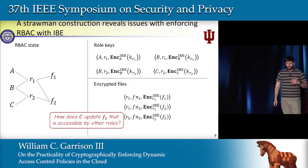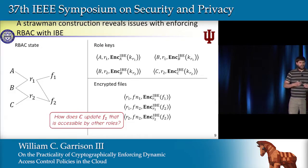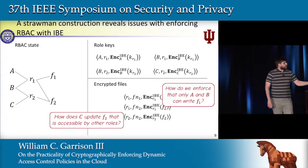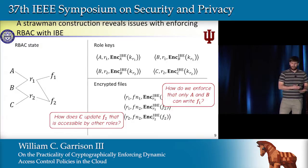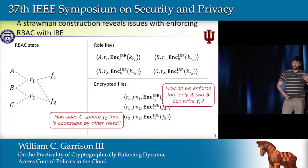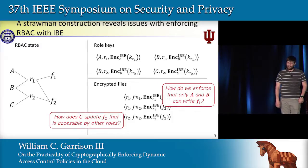But what happens when things start to change? For instance, how can user C update the contents of file 2, given that it's accessible to users in other roles? How do we enforce that only users A and B are allowed to write to file 1? In identity-based encryption, anyone who knows an identity can encrypt to that identity. So how do we enforce that users can't overwrite files that they're not meant to be able to edit?